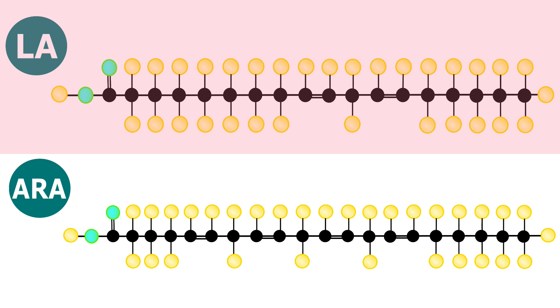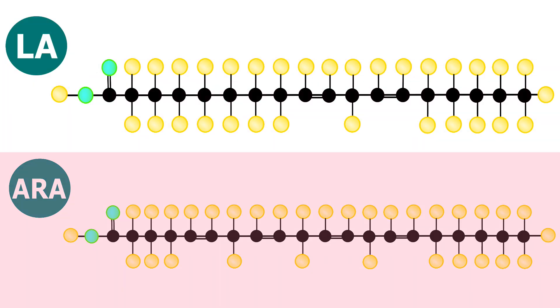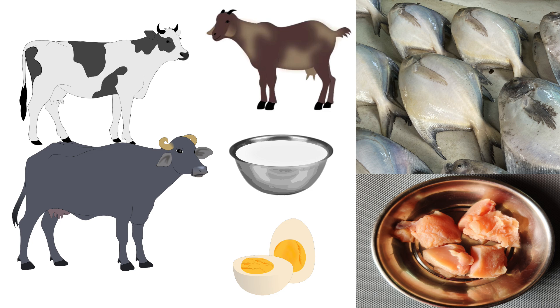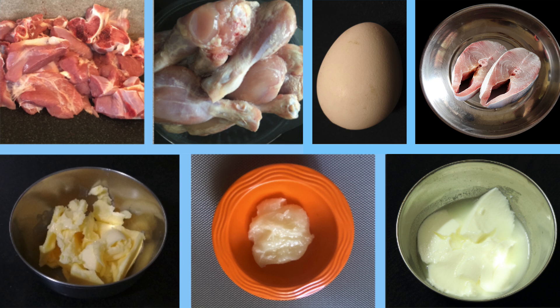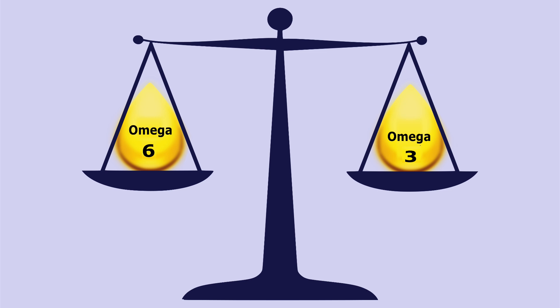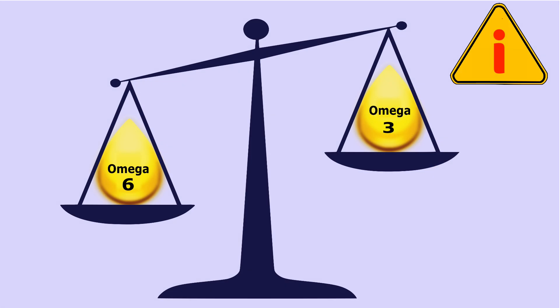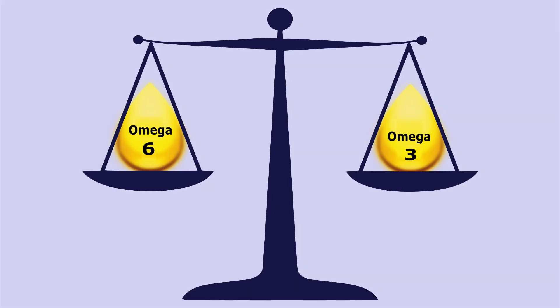Linoleic acid can be converted to arachidonic acid. Arachidonic acid is found only in animal-derived foods. The main sources are meat, poultry, fish and dairy products. Remember that our body needs a balance between omega-6 and omega-3. Many studies suggest up to a ratio of 4 to 1, with the ideal ratio of omega-6 to omega-3 in the diet being 1 to 1.